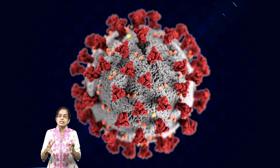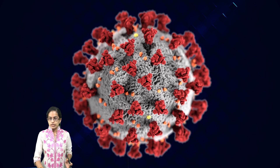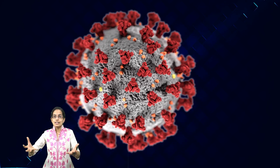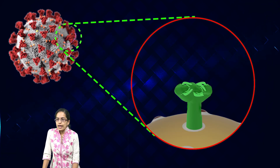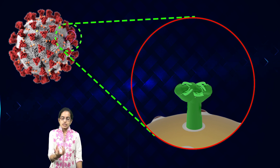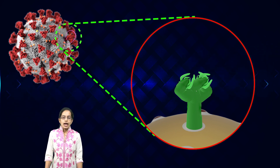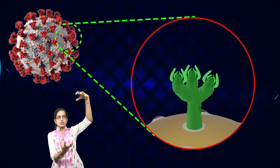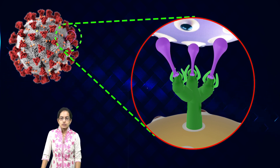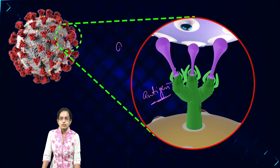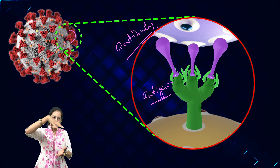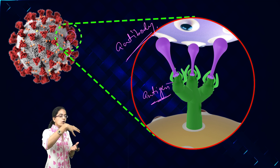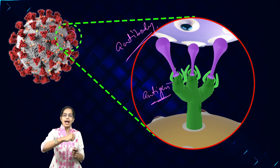Understanding this in context of the recent situation is very important. With COVID-19, these are the spike proteins of the coronavirus. When these spike proteins open, the antibodies bind to the antigen — the spike proteins act as antigens. This antibody-antigen binding helps us understand how the immune system actually acts.